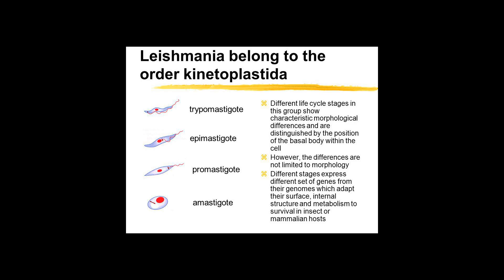Kinetoplastids are capable of forming actin microfilaments but their role in the cytoskeleton is not clear. Other cytoskeletal structures include the specialized attachment between the flagellum and the kinetoplast.